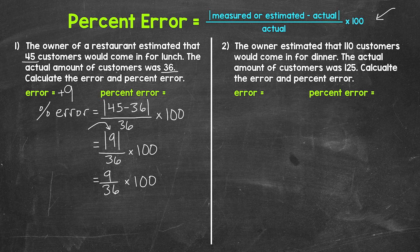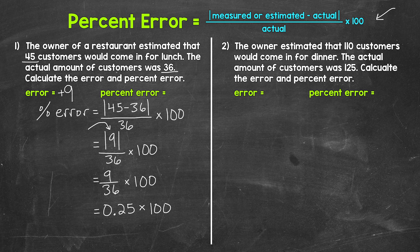Now we need to divide to get this to a decimal. So we have 9 divided by 36, which gives us 0.25 — 25 hundredths. Converting that decimal to a percent gives us the percent error. We're presenting the error as a percentage of the actual value, so we multiply the decimal by 100. A quick way to do that is to move the decimal twice to the right — once, twice — and that gives us 25%.